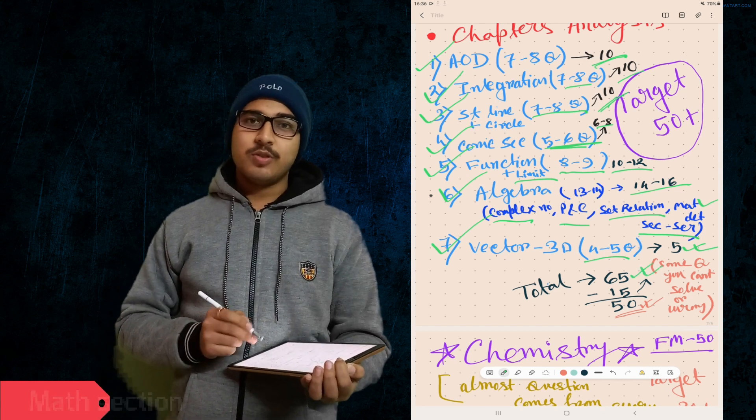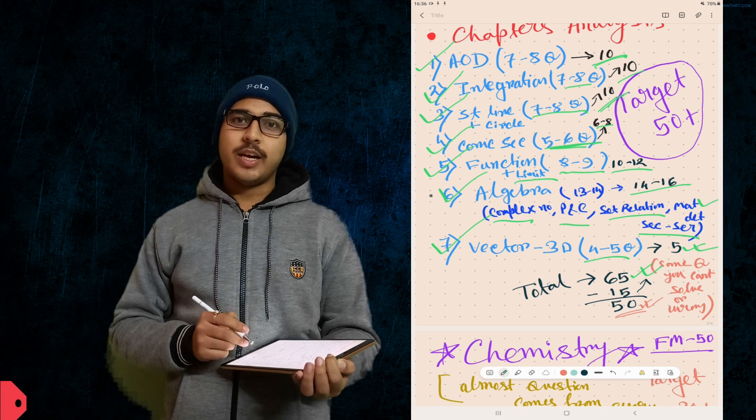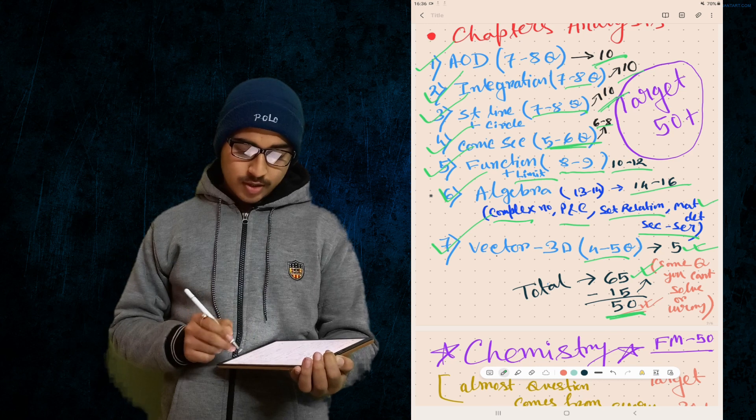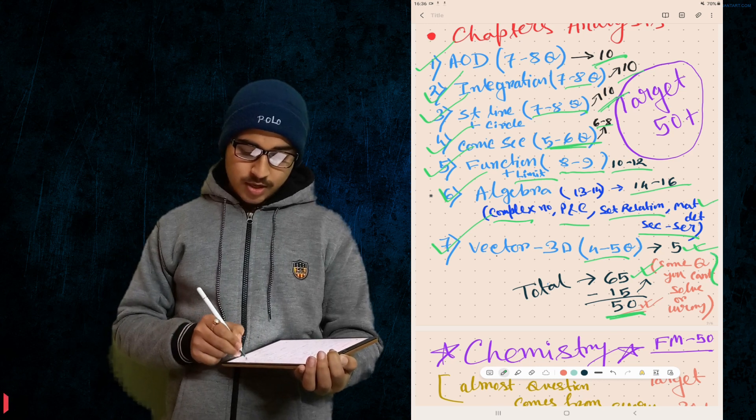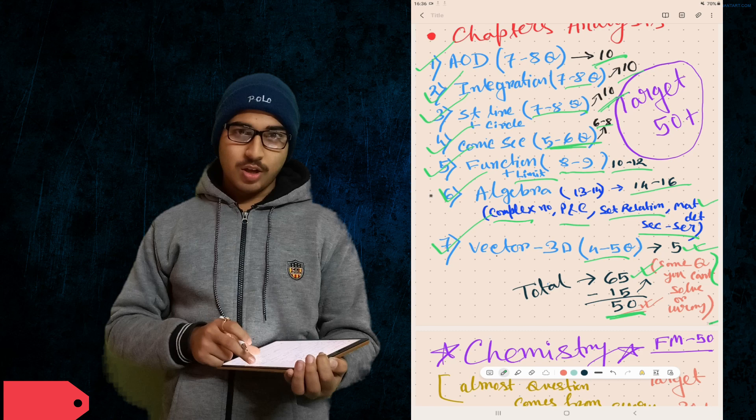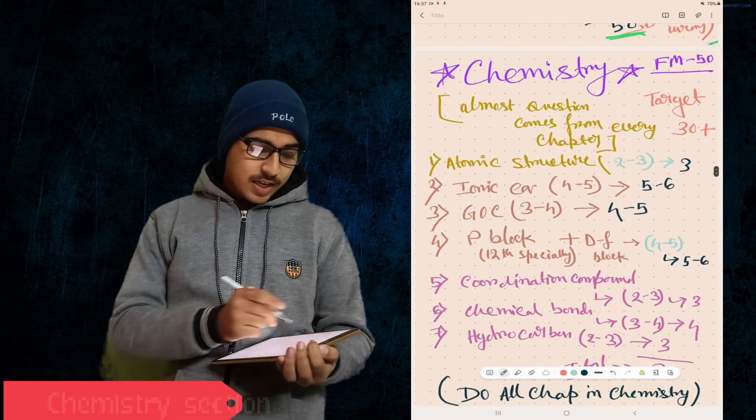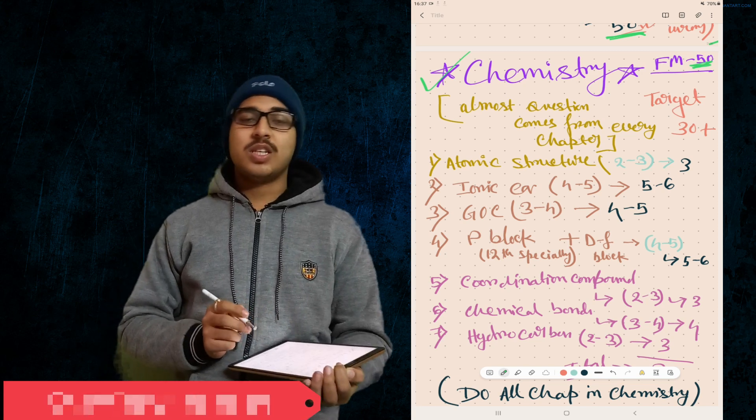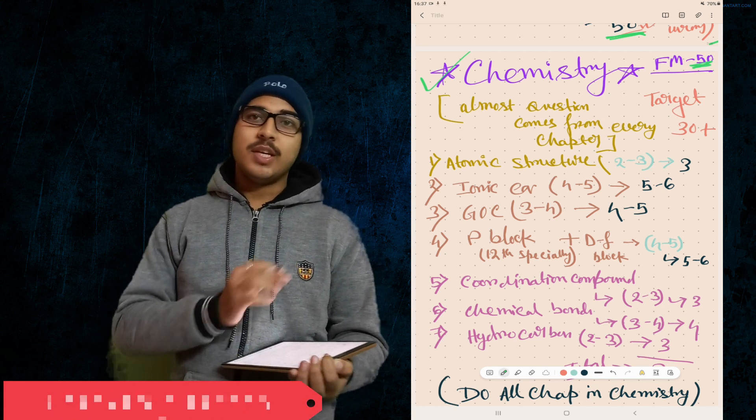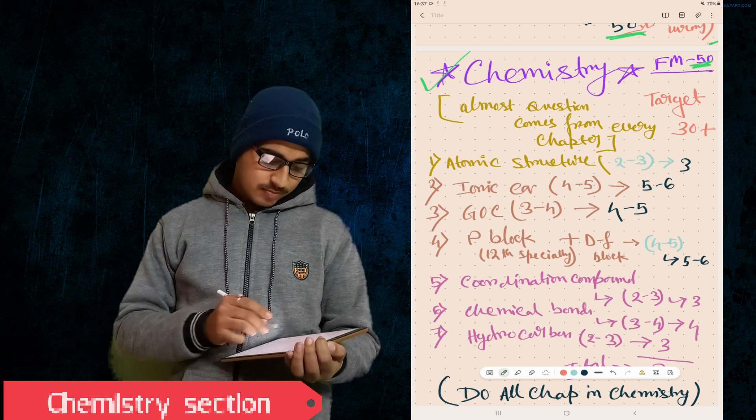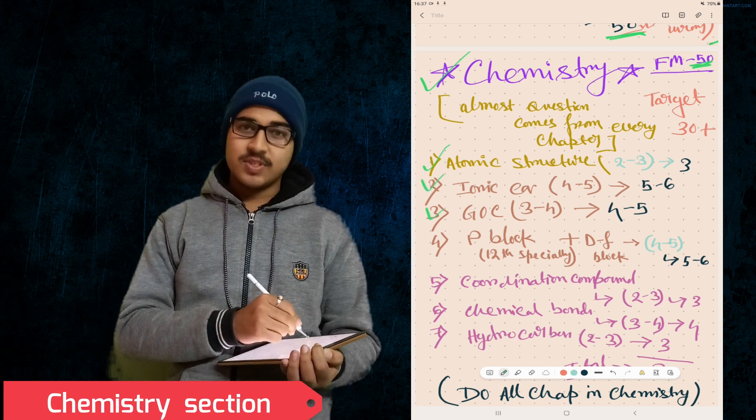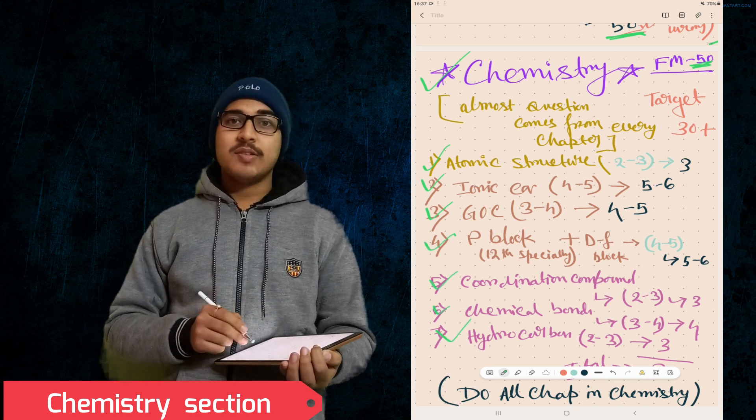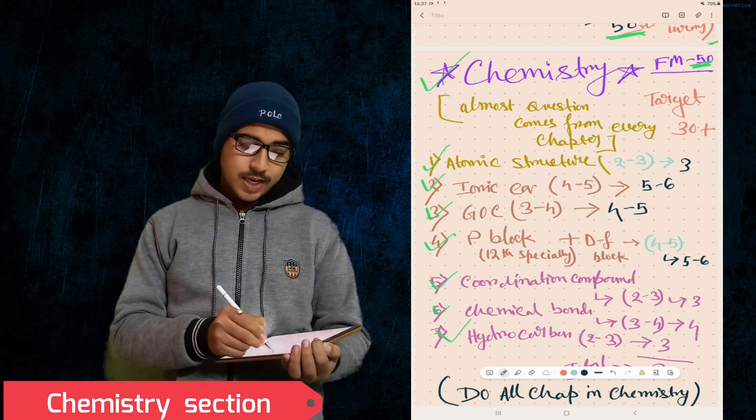I assume some questions will be wrong and some you can't solve, so 15 marks less - 50 is our target in Math. Now let's talk about Chemistry. In Chemistry, FM is 50 marks. Almost all questions come from every chapter equally divided, but I provided you the chapter list. In any case, you have to do all chapters. Our target is 30 marks in Chemistry.